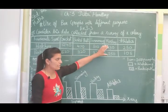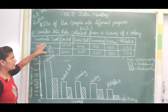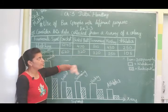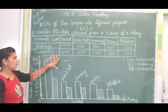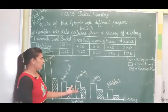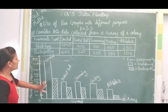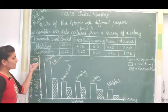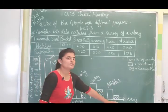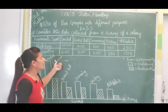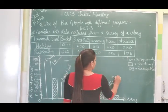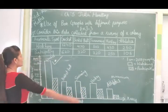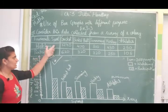Whenever two different types of observations are given to you — here watching and participating — you have to represent them in the form of a double bar graph. From this graph we can see that the number of people watching and participating in cricket is the highest. The athletics bar graph is the lowest, so the minimum number of people are watching and participating in athletics.